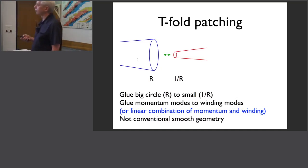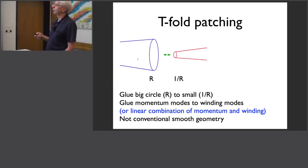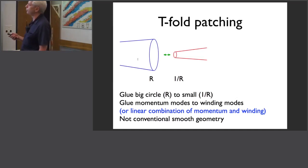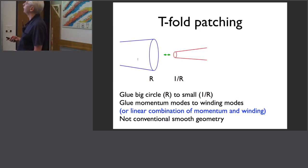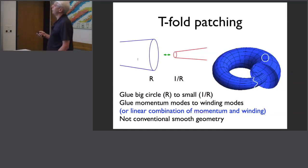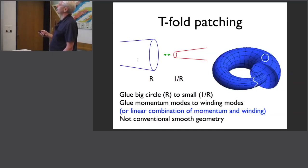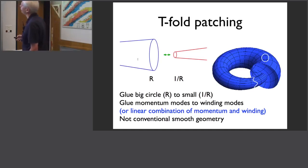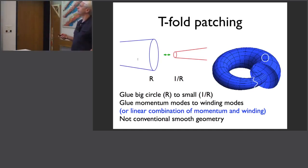In more complicated examples, the duality patching can also change the topology, not just the geometry, which makes it much harder to draw pictures. But here's a picture of what happens if you have a cylinder going from a small radius to a large radius and then try to glue them together — you get a structure like this.